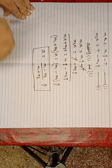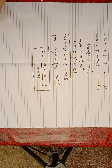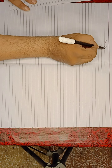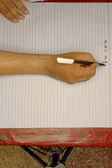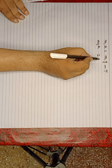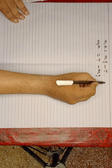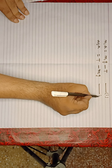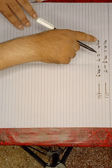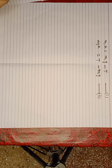Similarly, we can also find the formula for tension. Now we find the value of tension on a separate sheet. Again, we write equation number 1: M1A equals M1G minus T, and equation number 2: M2A equals T minus M2G. First of all, we multiply equation number 1 by M2 and equation number 2 by M1.